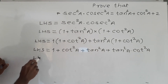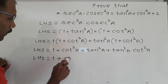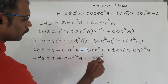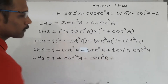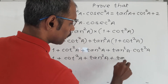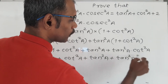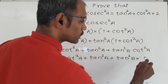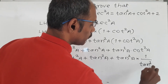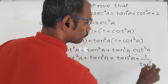Now LHS is equal to 1 plus cot square A plus tan square A plus tan square A into cot square A. I will use the formula for one of these two. Cot A means 1 upon tan A, so cot square A means 1 upon tan square A.